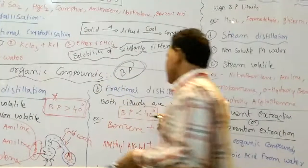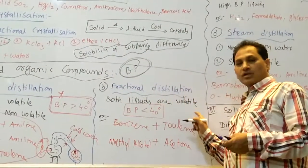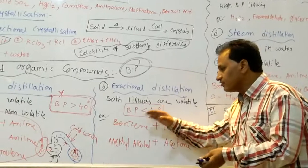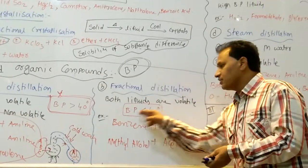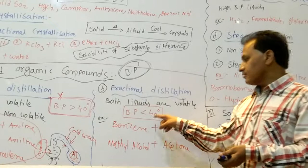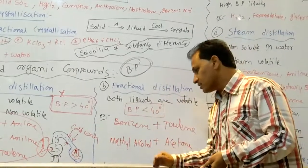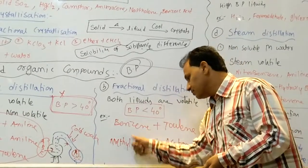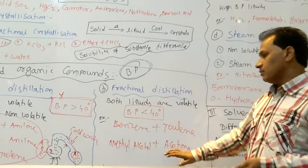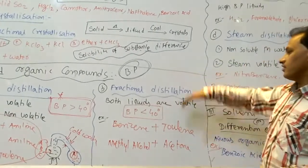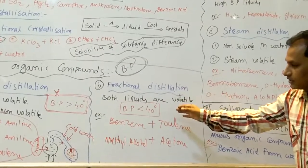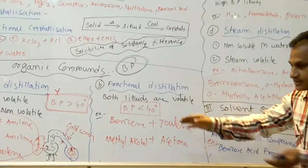In fractional distillation, both liquids are volatile. But the boiling point difference is very less — less than 40 degrees. When the two liquid boiling point difference is less than 40 degrees, we go to fractional distillation. Examples: benzene and toluene, methyl alcohol and acetone can be purified by fractional distillation, because both are volatile and the boiling point difference is less than 40 degrees.